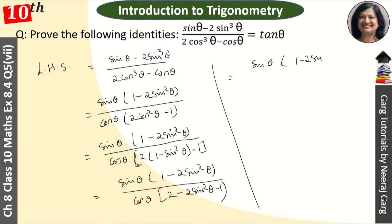...1 minus 2 sin² θ upon cos θ, and this is 2 minus 1, which is 1 minus 2 sin² θ. Both brackets cancel, and what is left for us?